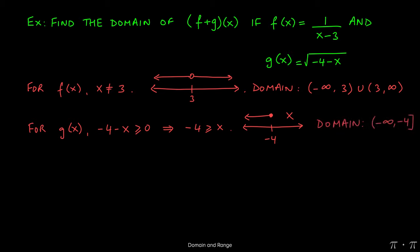So the domain of g of x is from negative infinity to negative 4, but because at negative 4 the function is going to ask you to find the square root of 0, we include negative 4. We can find the square root of 0.